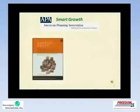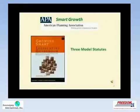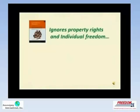The APA produced a book entitled Growing Smart Legislative Guidebook. It contains three model statutes and two model executive orders. These extensive, detailed model statutes provide for the control of every facet of land use, ignoring private property rights and individual freedom.